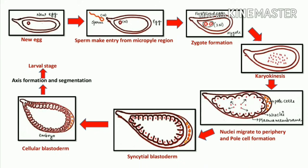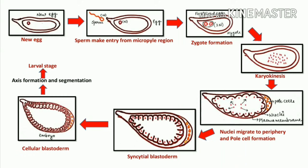After that the nuclei migrate to the periphery and pole cell formation takes place. Initially all the nuclei were present in the center, but after karyokinesis these nuclei start migrating to the periphery of the cell. The nucleus migrates to the periphery region and after that there is formation of a pole cell at the very terminal portion.